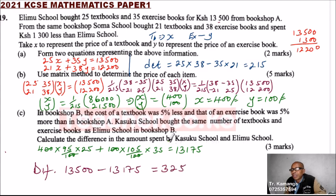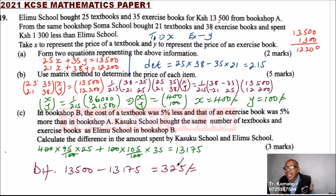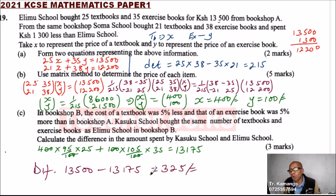So the difference is 325 Kenyan shillings. Erimu spent 325 shillings more than what Kasuku used. By doing that, you'll be able to get 3 marks.